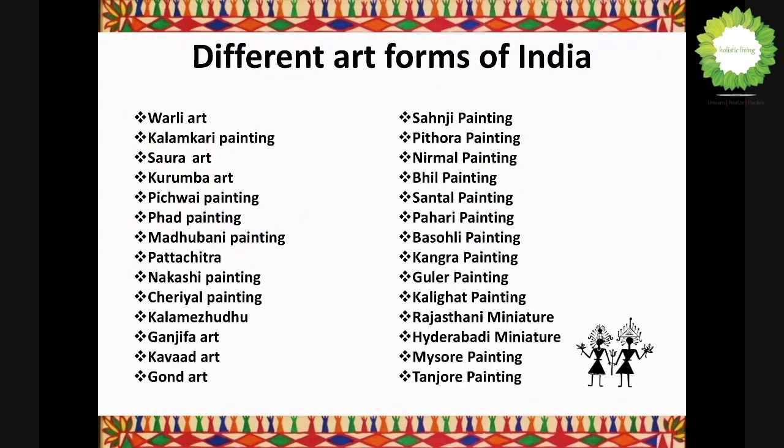Here you can see there are close to 30 plus art forms. We hardly know about Warli, Kalamkari, Tanjore painting, Mysore painting, and miniatures, but there are still 20 plus art forms being practiced by different groups of people across India. I'm not going into the full list as it would take too long, so moving on to the next slide.